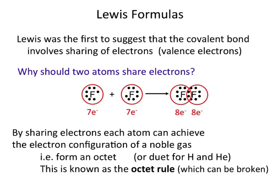Now for hydrogen and helium, they only want a duet because hydrogen and helium are just filling the 1s orbital, whereas anything in the second row of the periodic table is going to try to fill the entire n=2 shell, which has the 2s and the 2p orbital in it. So that makes eight electrons.